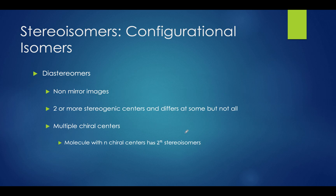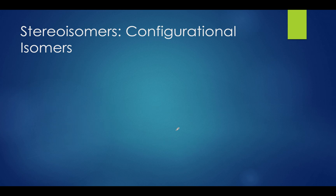Let's end this lecture with diastereomers. Diastereomers are non-mirror images that have two or more stereogenic centers and differ at some but not all of these centers — basically meaning they have multiple chirocenters. Remember that a molecule with n chirocenters will have 2 to the power of n stereoisomers. For example, if a molecule has two chirocenters, it will have 2² or 4 stereoisomers. Let's do a quick practice problem now that we know about enantiomers and diastereomers.